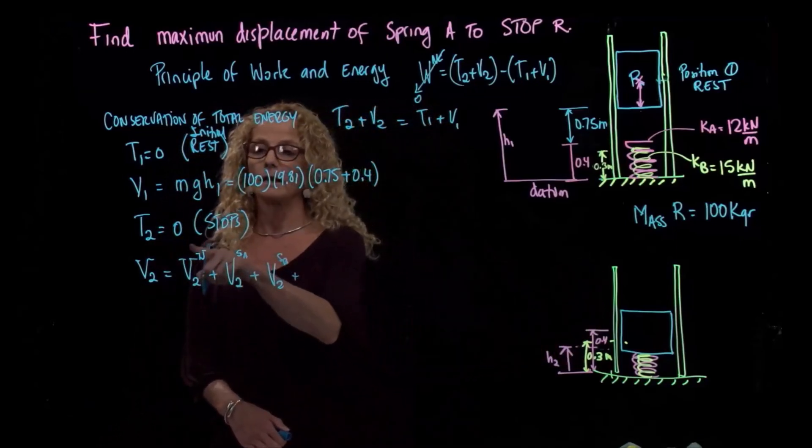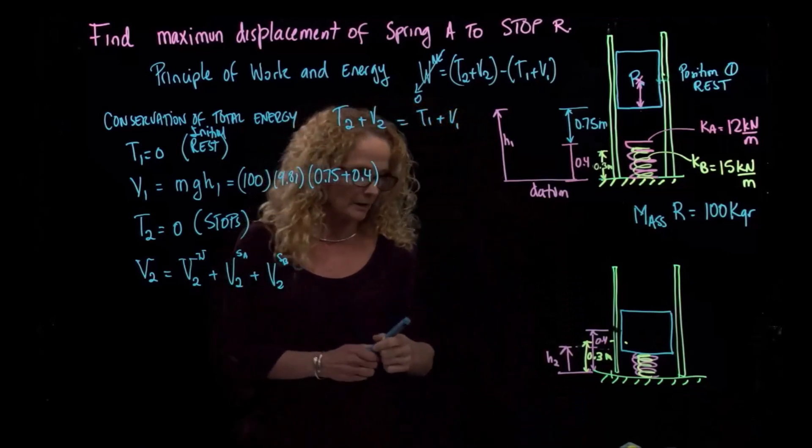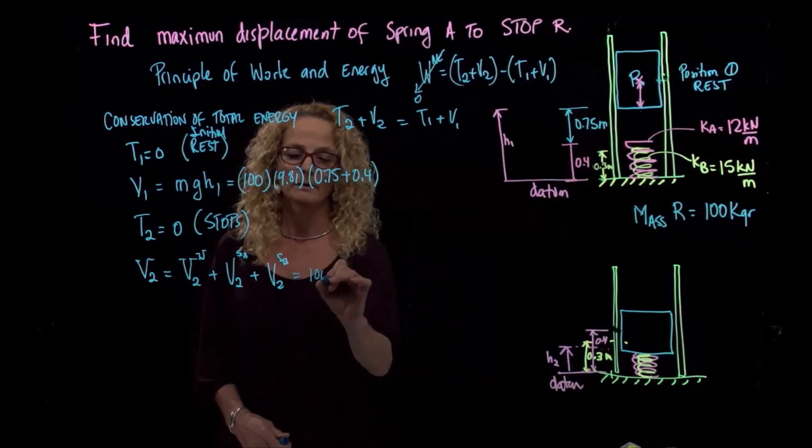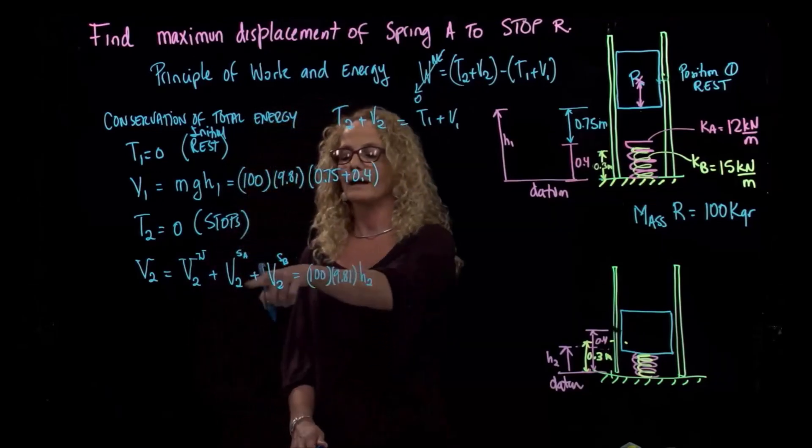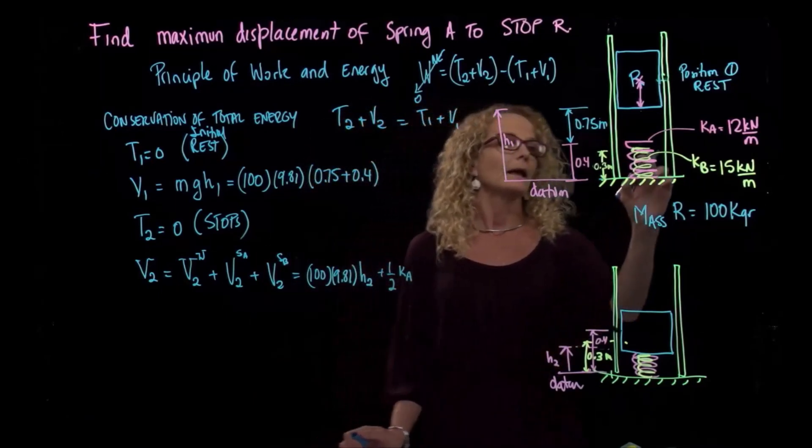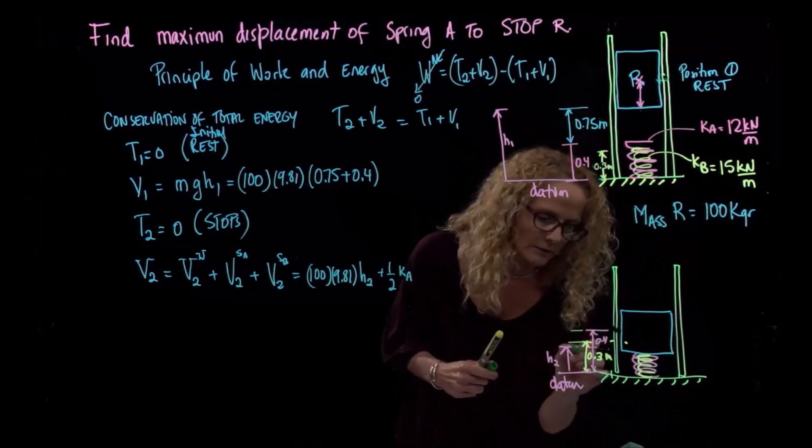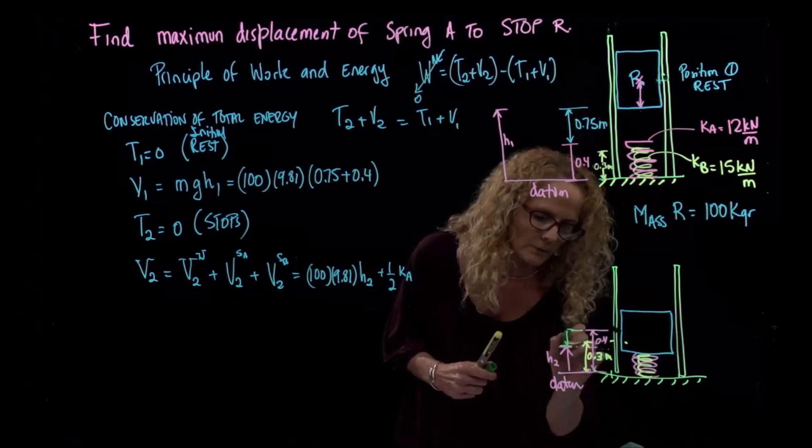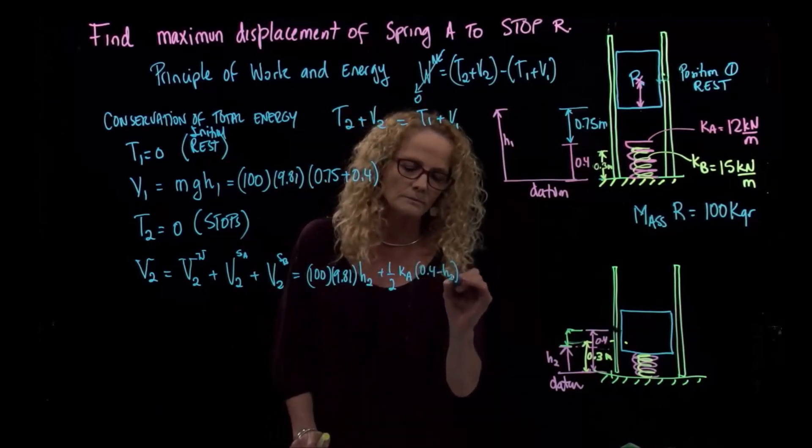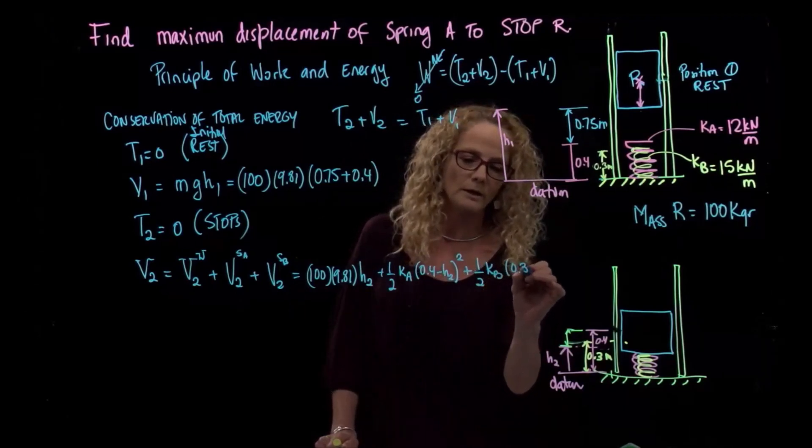The potential energy of the block is still positive because it's above the datum, which is the same datum as before. So it will be equal to 100 times 9.8 times H2. Then I have the potential energy of my springs. So it will be one-half Ka times the displacement of Ka. Ka is the pink one, the bigger one. It has compressed this distance. So that will be the compression of spring A, which will be 0.4 minus H2. And for spring B will be 0.3 minus H2 squared.